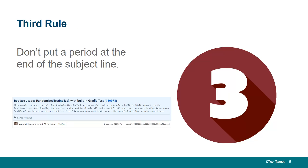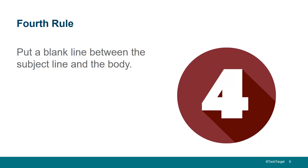Don't put a period at the end of the subject line. I have a nice little commit message here: 'Replace usages of this particular object with the built-in Gradle test.' That's a nice commit message. It might push over that 50-character limit because the name of the object is long, but otherwise that's a good commit message. Mentioning the object you worked on in the git commit message or somewhere in the body isn't a bad idea either.